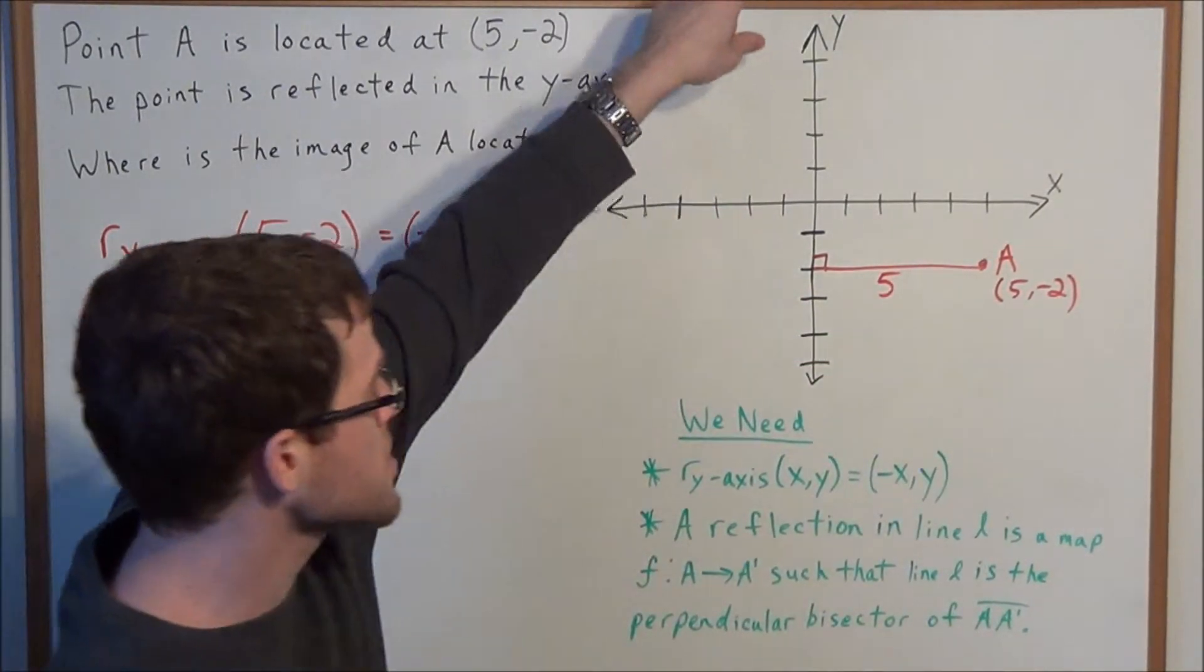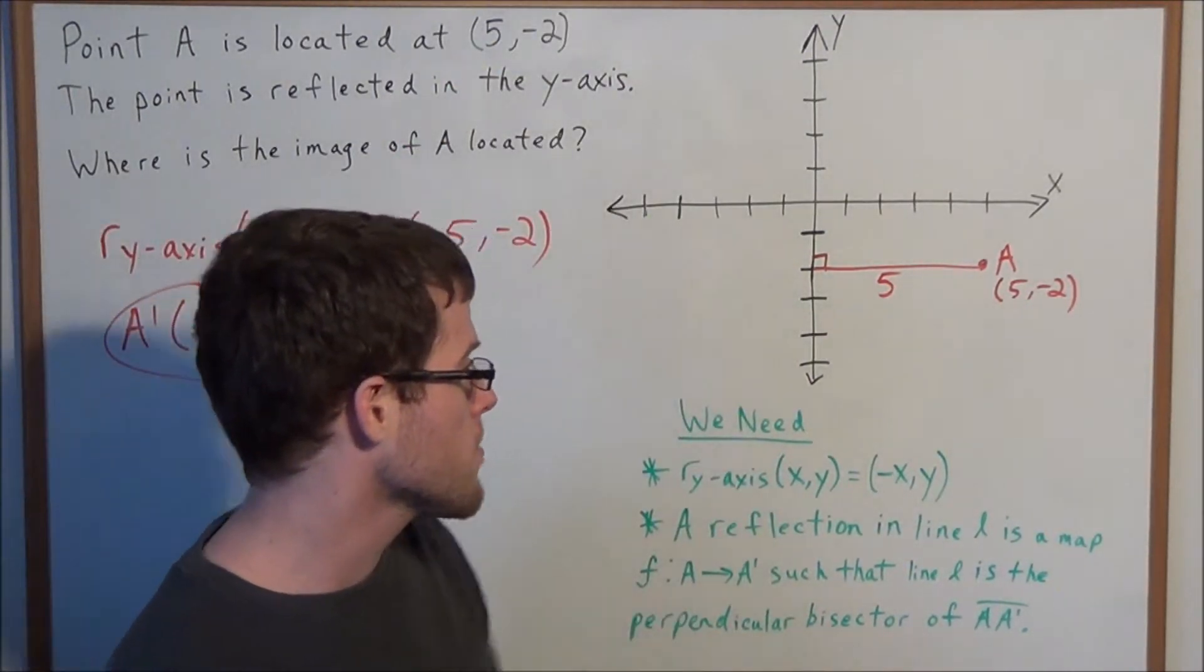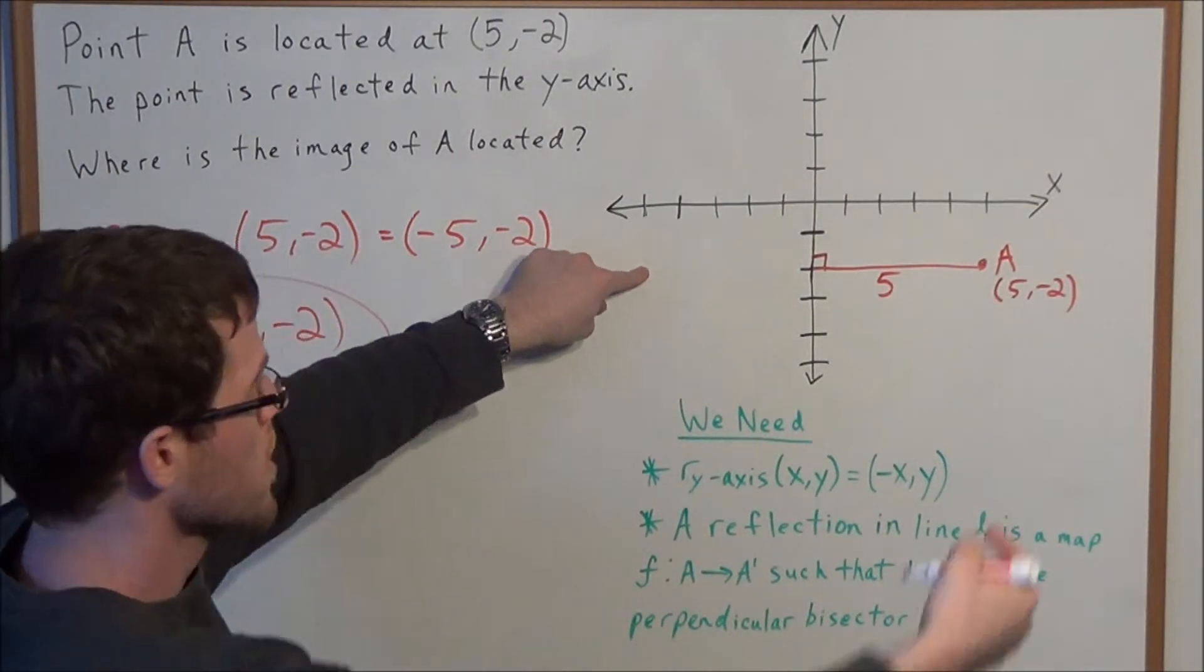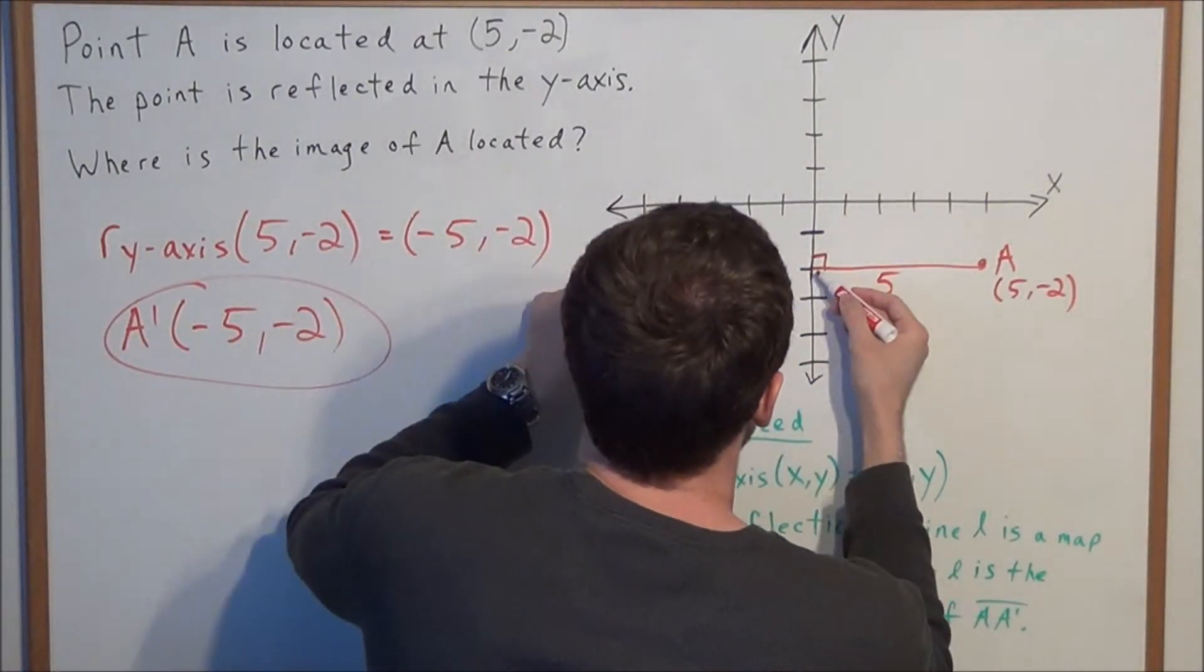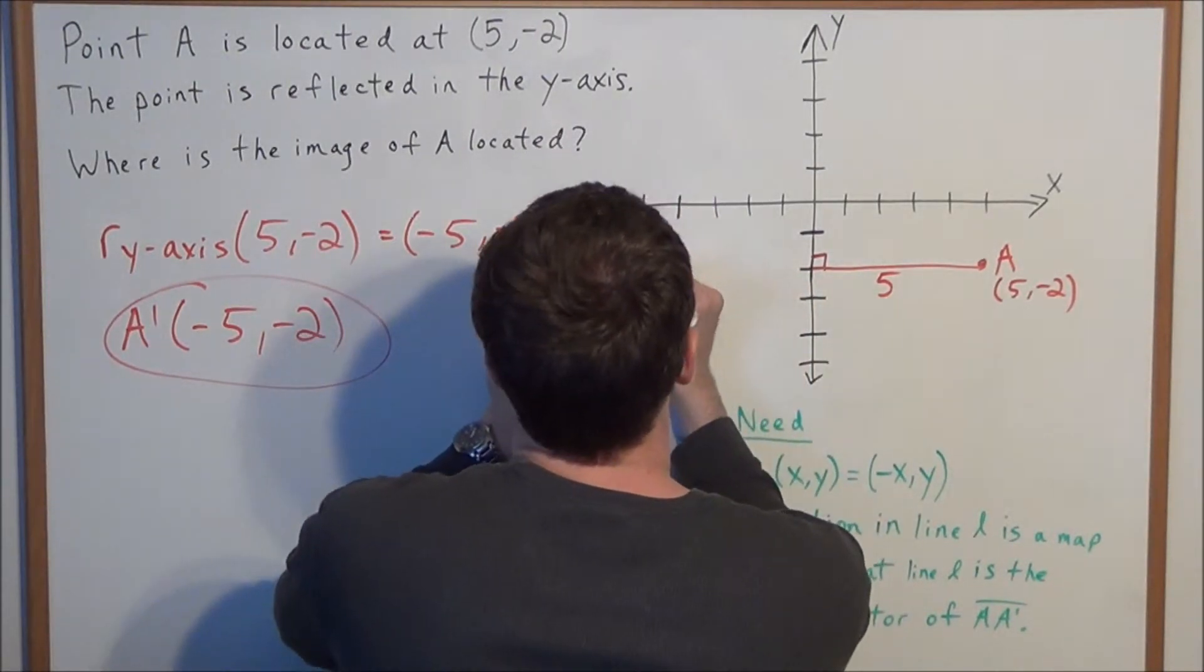So if the y-axis is the perpendicular bisector of line segment AA prime, that means A prime has to be 5 units away from the y-axis, going the other way. So we're going 1, 2, 3, 4, 5 to the point A prime.